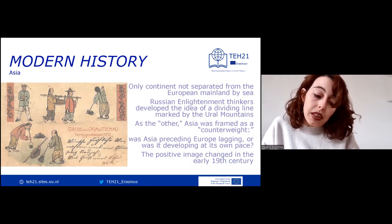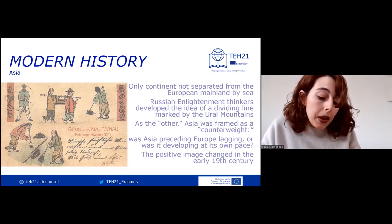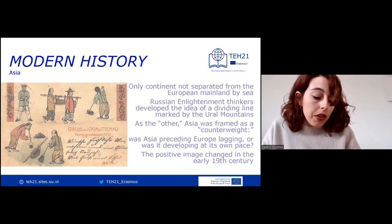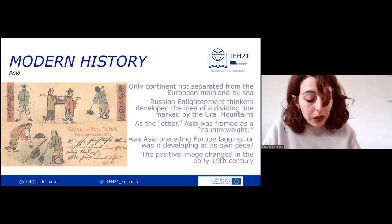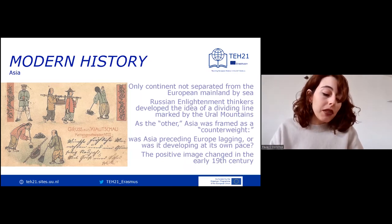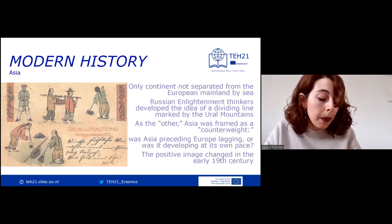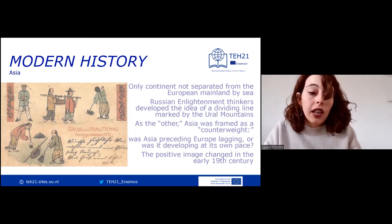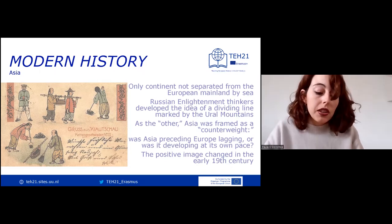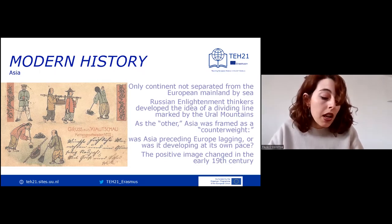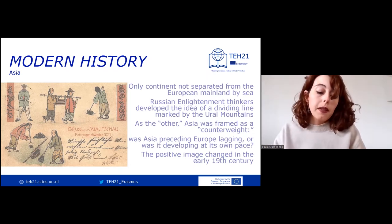Was Asia preceding Europe, lagging behind, or rather developing at its own pace? European images of Asia were intertwined with Asian self-perceptions derived from representations of Europe, in the same way that European representations of Asia carried implicit representations of Europe itself. However, this positive image changed in the early 19th century, while Europe's economic and technical superiority was displayed in the Industrial Revolution, and Europe's others appeared to fall behind on the track to modernity.